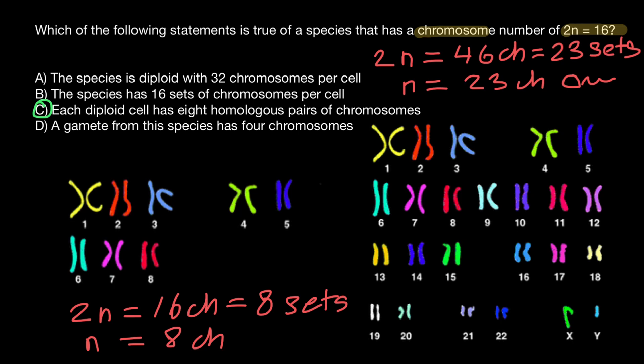And variant D, a gamete from this species has four chromosomes. This is not true. Only one chromosome from each pair would give us eight chromosomes.